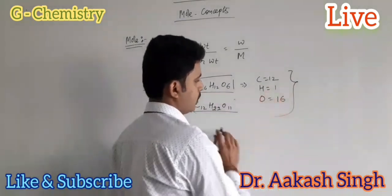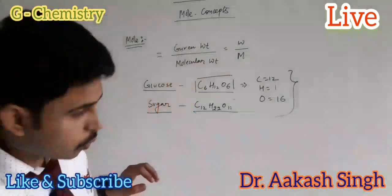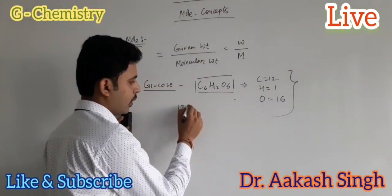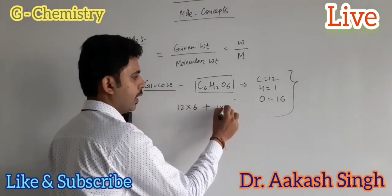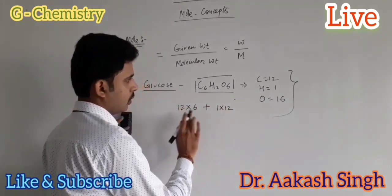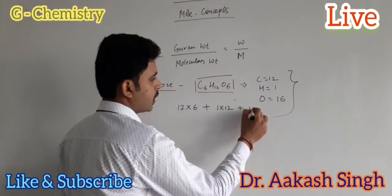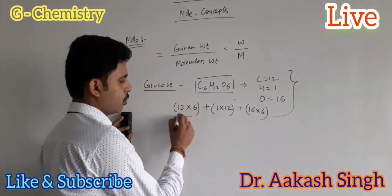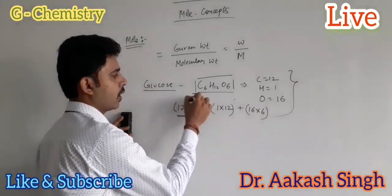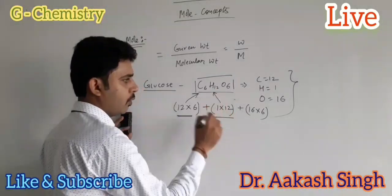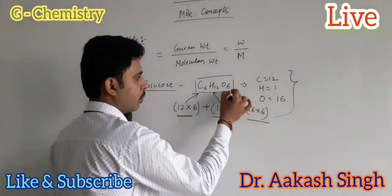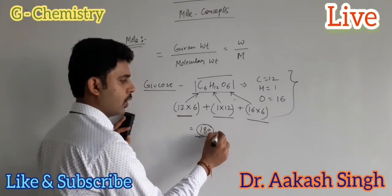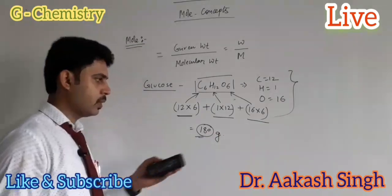For glucose, the molecular mass will be 12 into 6 plus 1 into 12 plus 16 into 6 — where 12×6 is for carbon, 1×12 is for hydrogen, and 16×6 is for oxygen. The total value is 180 grams.